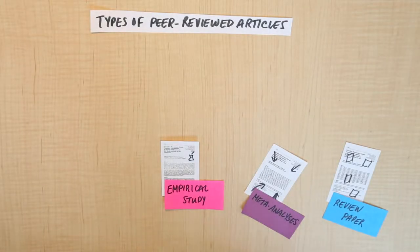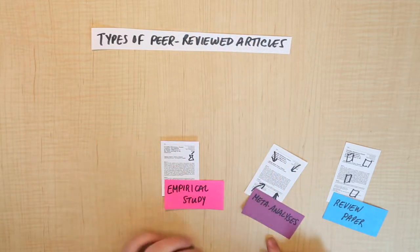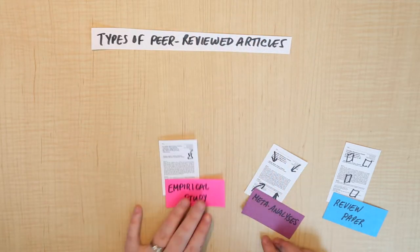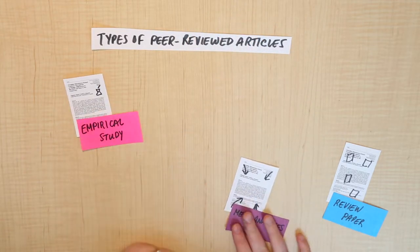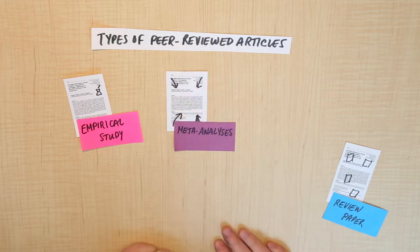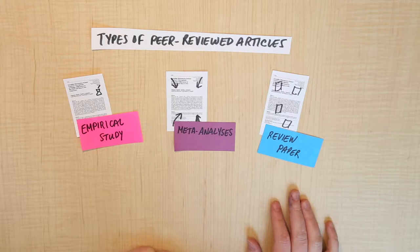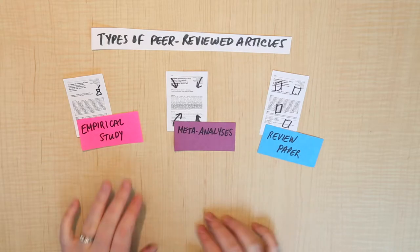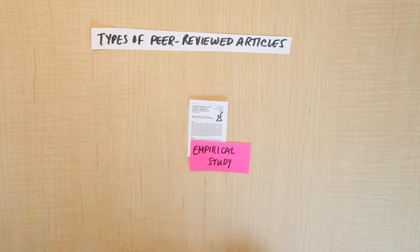When we started this tutorial, we started off talking about the different types of peer-reviewed articles that you're going to encounter in your research. We talked about empirical studies, meta-analyses, and review papers, and how, for the purposes of your research, generally speaking, you want to be focusing on empirical studies.